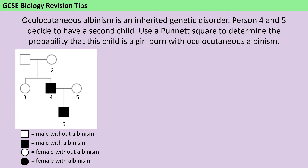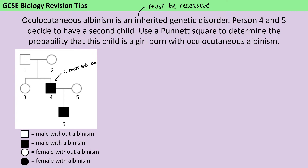The first thing I need to do is work out from the information given whether this disorder is caused by a recessive allele or a dominant allele. Looking at the genetic diagram, person four has albinism but his parents both don't have albinism, which tells me this is caused by a recessive allele. Therefore his genotype must be little a, little a — homozygous recessive.